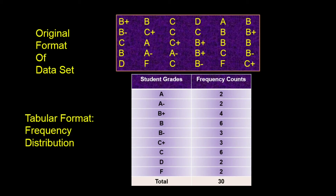But the data is still difficult to read because there are so many categories. This is where art meets science in statistics. The science of statistics tells us how to create a frequency distribution table mathematically, but to make the table more interesting and easier to comprehend, we need to think about how the data can be presented in a more pleasing way.